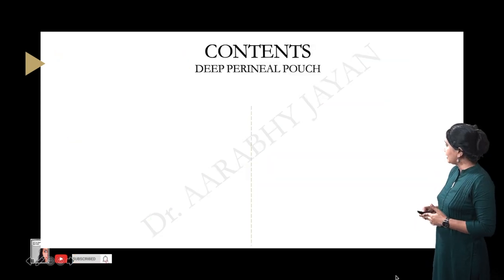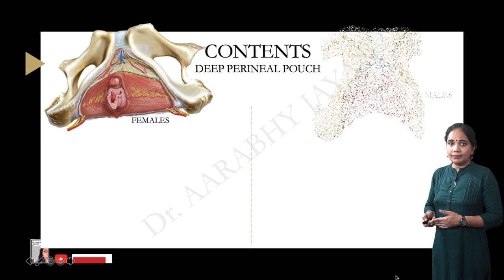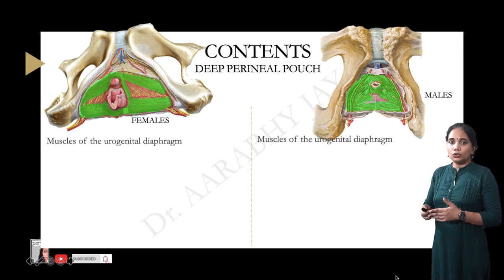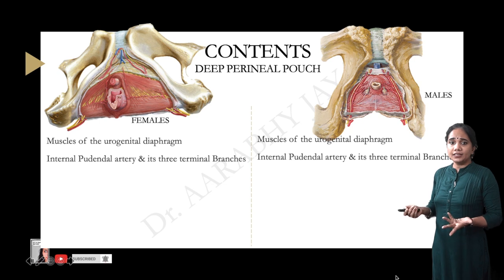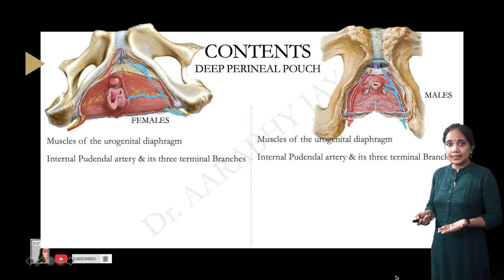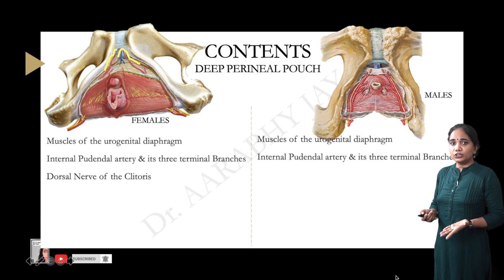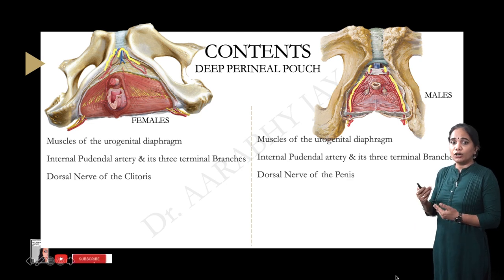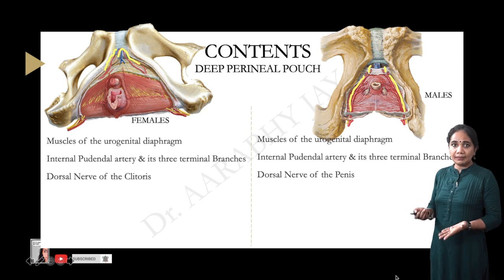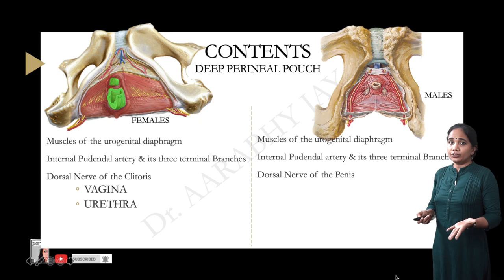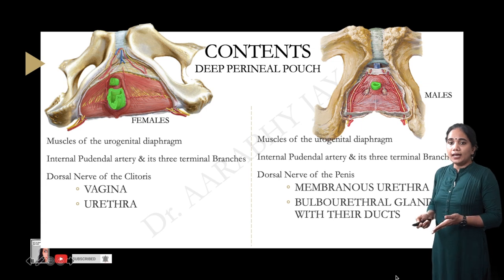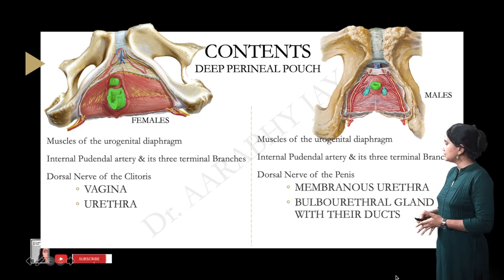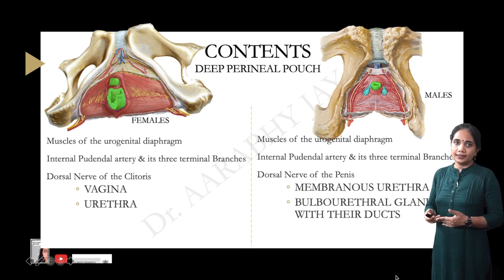The contents of the deep perineal pouch include the muscles of the urogenital diaphragm common to both sexes, the internal pudendal artery and its three terminal branches, the dorsal nerve of the clitoris in females and the dorsal nerve of the penis in males. Structures different between sexes: in females the vagina and urethra are present; in males there is the membranous part of the urethra and the paired bulbourethral glands with their ducts.